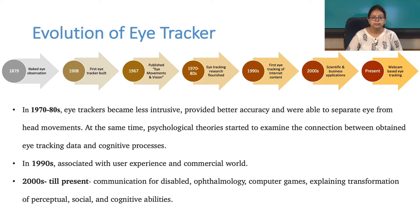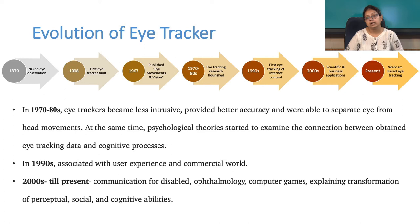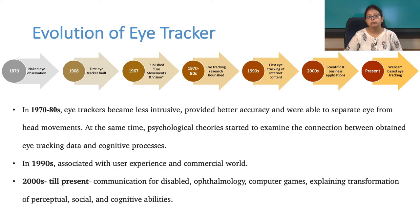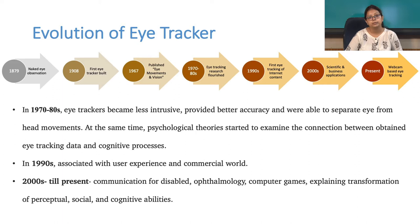During the 1970s and 80s, there was a huge advancement of eye tracking devices. Eye trackers became less intrusive, gave better and more accurate measurements, and were able to separate eye from head measurements. There was also a strong establishment between eye movement recordings and psychological experiments. In the 1990s, eye tracking was highly associated with user experience and the commercial world of entertainment and advertising.